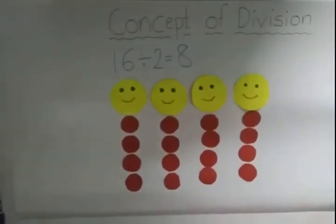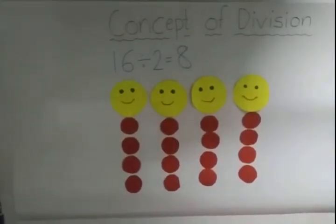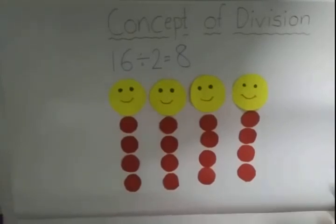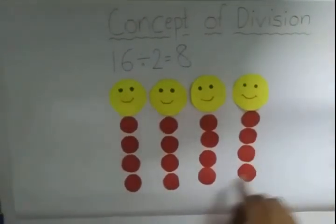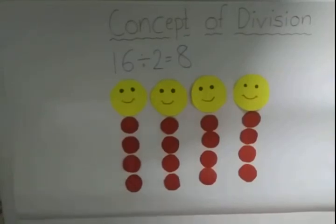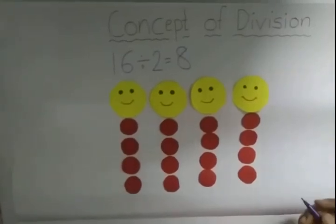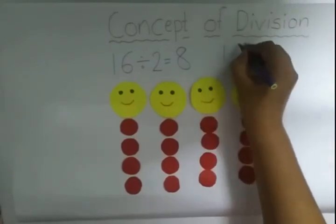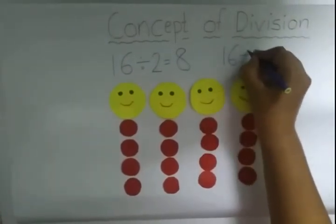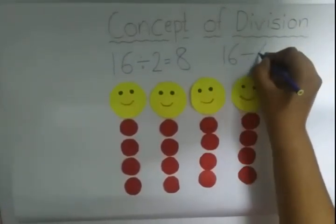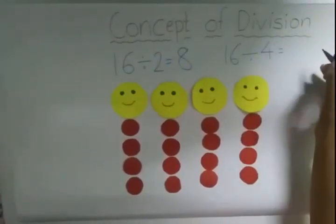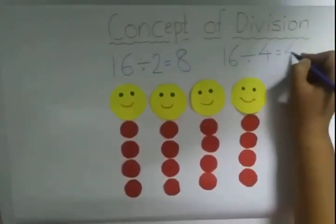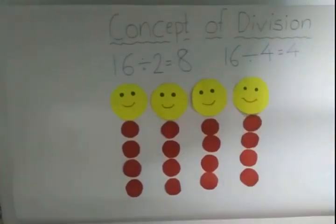Now count how many candies each smiley gets. So now we have distributed 16 candies among four smileys, and each one is getting 4 candies.